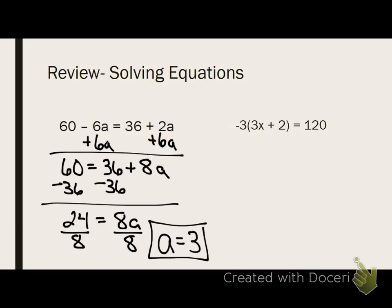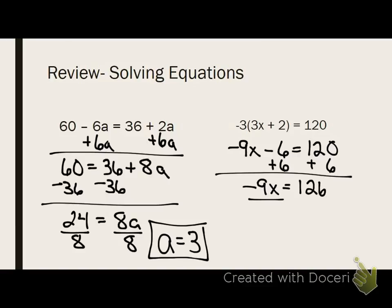Okay. Then, in the second one, distributive property. Now what do I do? Add 6a to both sides. Then what do I do? By negative 9 to get negative 14. Negative 14. Anybody get both? Both of them? Awesome. Good job, guys. All right.